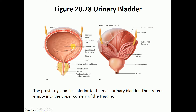Looking at the inside of the bladder, you can find three openings: two are the openings of the ureters, and the third is the opening that leads down to the urethra. The triangle made by these three openings is known as the trigone. The detrusor muscle contracts to empty the bladder. In this male image, you can also identify the prostate gland anteriorly and the seminal vesicles on the posterior aspect.